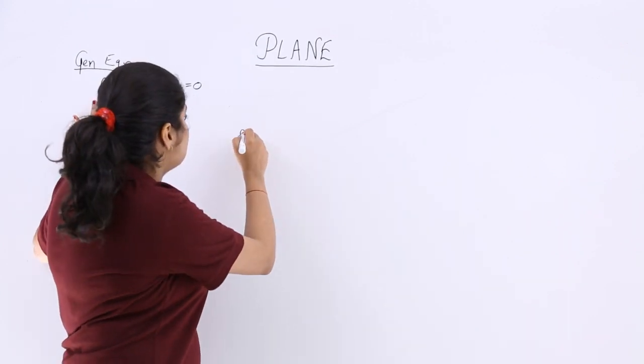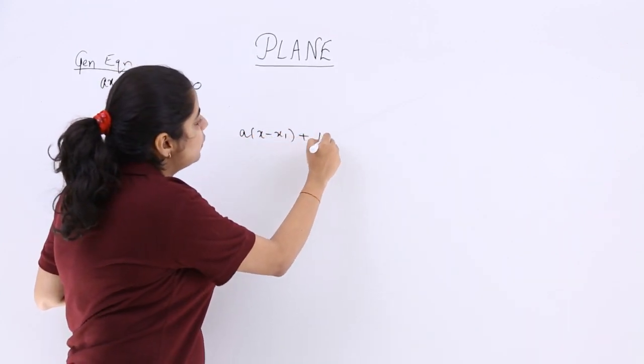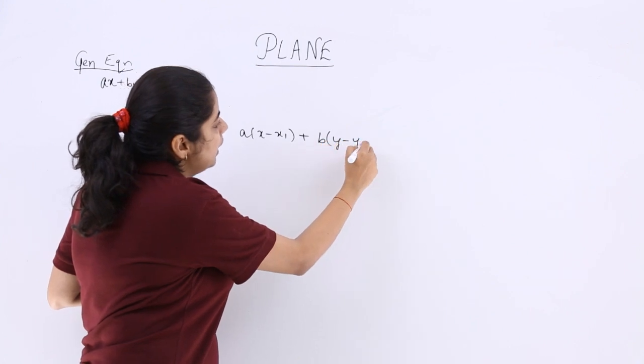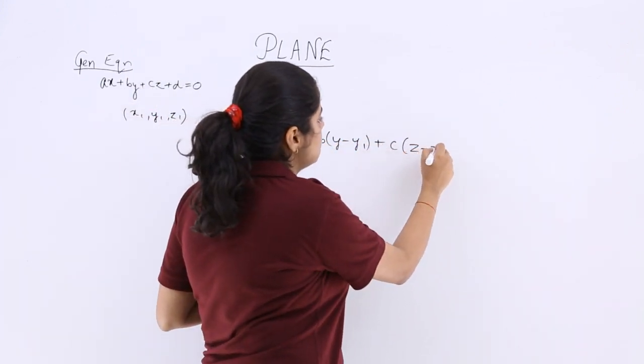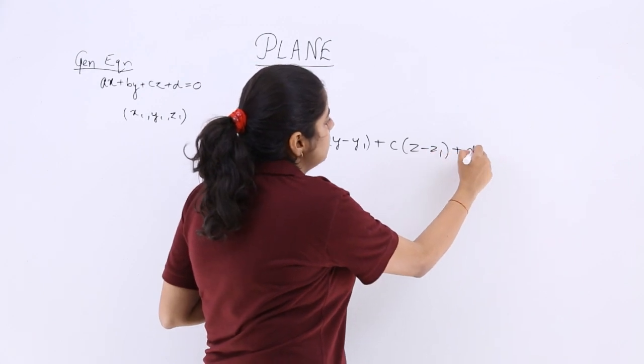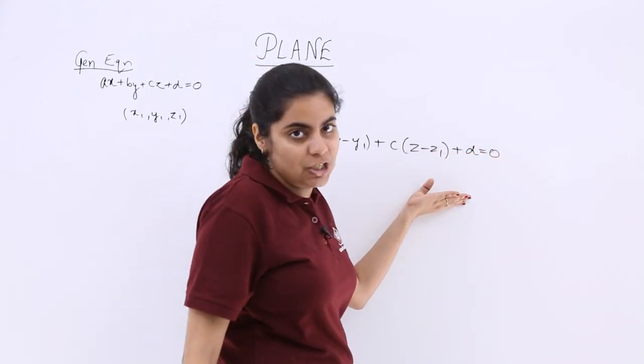It will not be ax, but it will be a(x - x1). It will not be by, but it will be b(y - y1). It will not be cz, but it will be c(z - z1). And rest plus d equal to 0, you cannot change this.